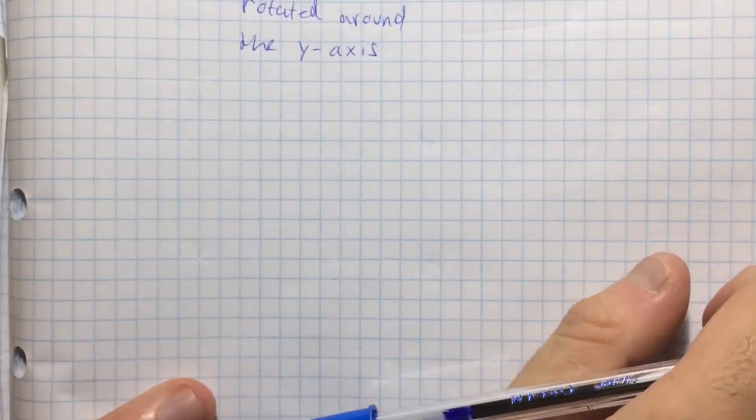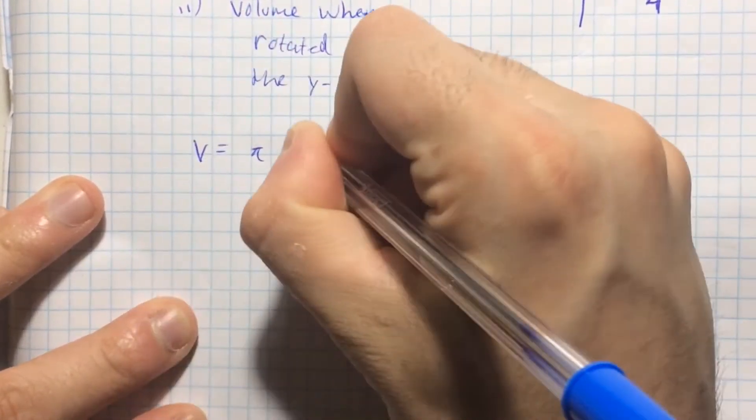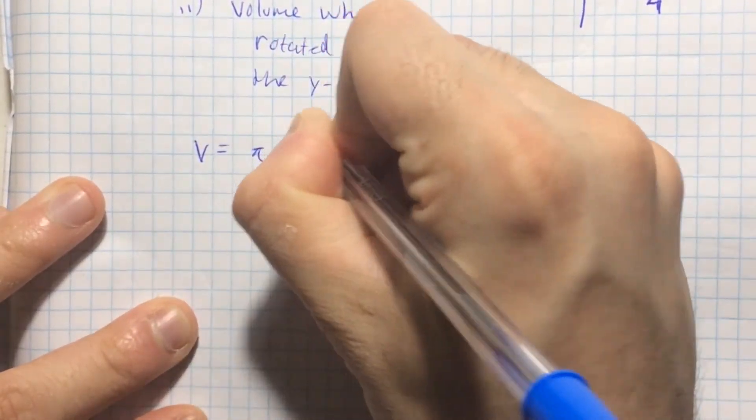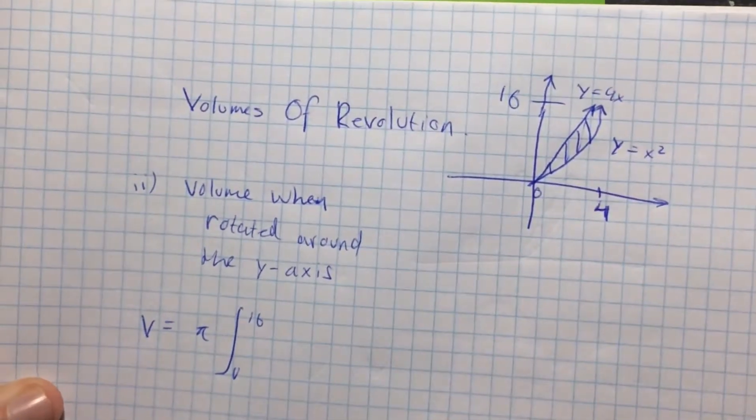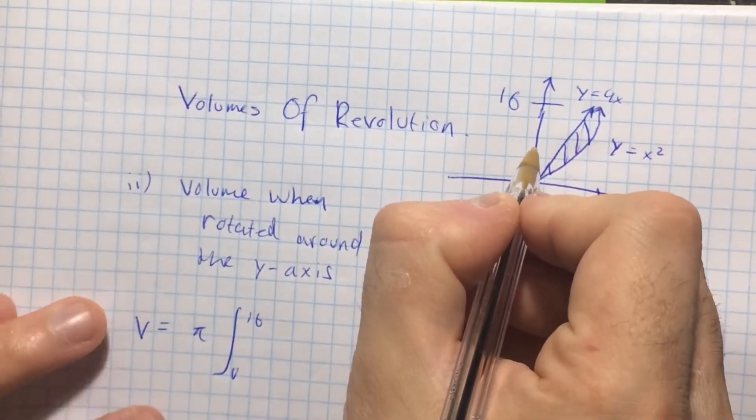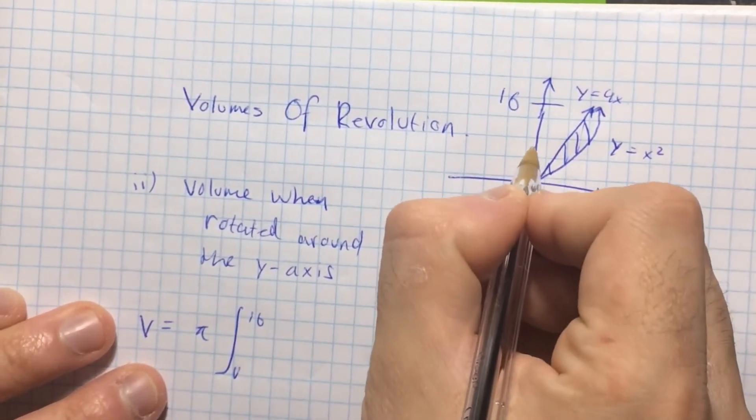So now I can literally just integrate the function. So volume is equal to pi times the integral, 0 to 16. And it's the opposite this time. So I go from the y-axis and I go perpendicular to it, which is a fancy way of saying, alright, let's go straight from this way.